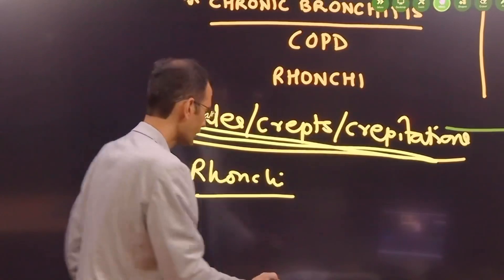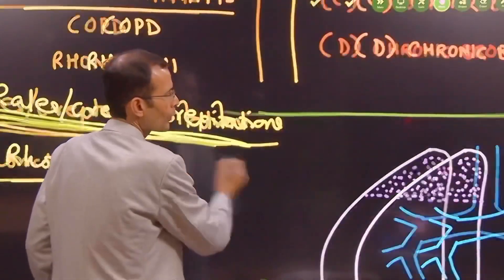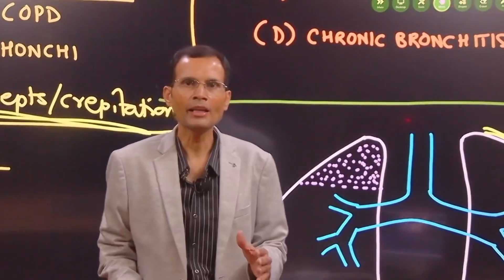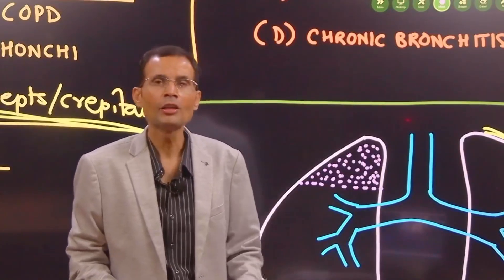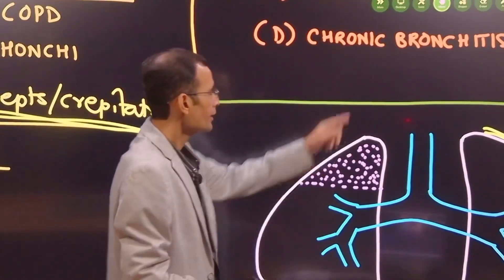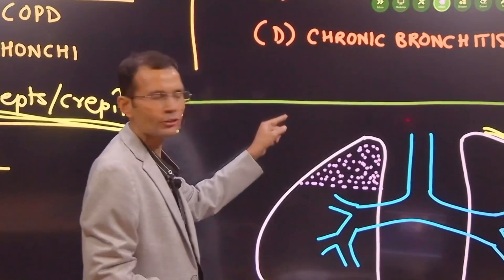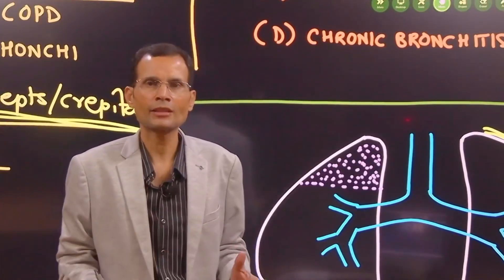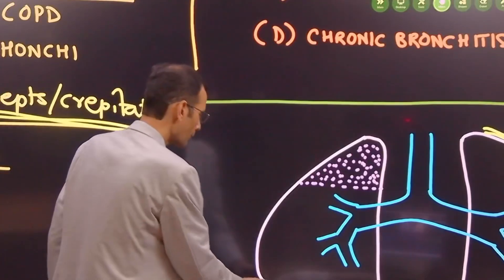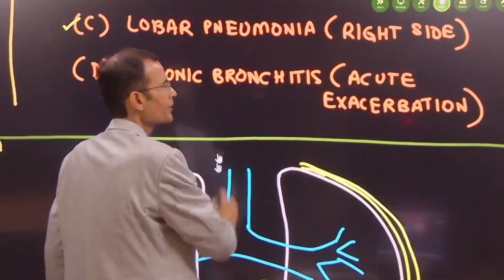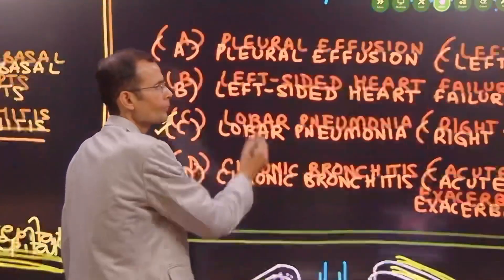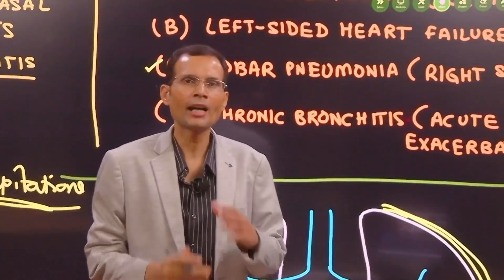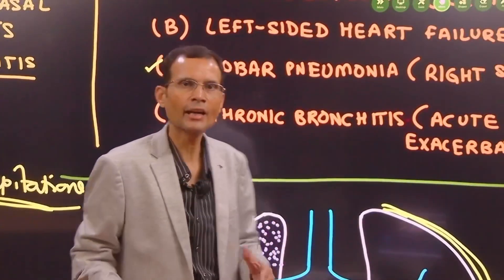Somewhat similar are the bubbling sounds or crackling sounds heard, which are called as rales or creps or crepitations. When? Let's say lung parenchyma is filled with fluid or it has got consolidated, then as the air passes through that fluid or that consolidation, we get to hear such sounds called as rales or creps. There are right-sided creps - that means it is a possibility that the disease is on the right side only.